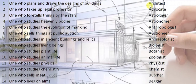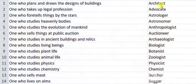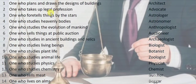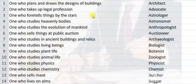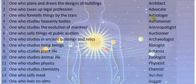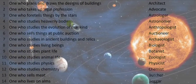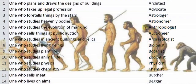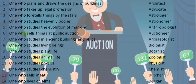Number two, one who takes up the legal profession is called a lawyer. One who studies stars and planets is an astronomer. One who studies the evolution of mankind is called an anthropologist.